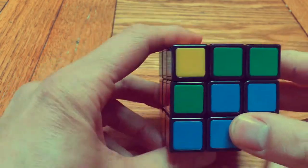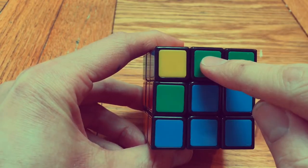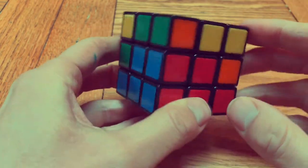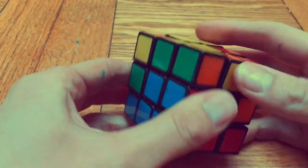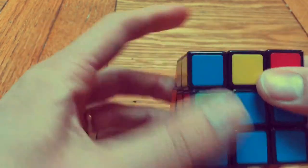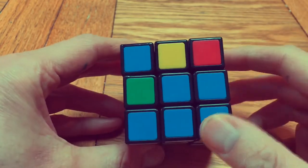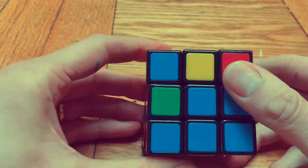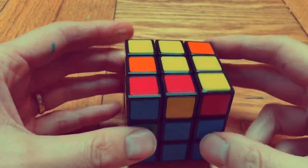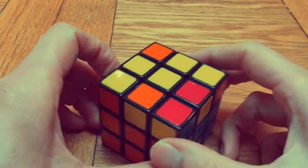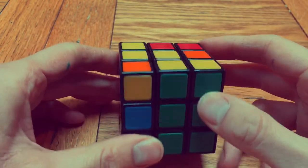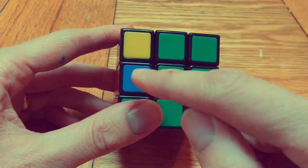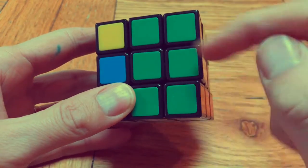Now the beginners method will ask you to move this piece out of place, then do some turning around on the top and then finally put things back into place. But that's very inefficient and curing inefficiency is the purpose of these Beyond Beginner videos. So I'm going to show you an algorithm for just swapping those two pieces straight away.